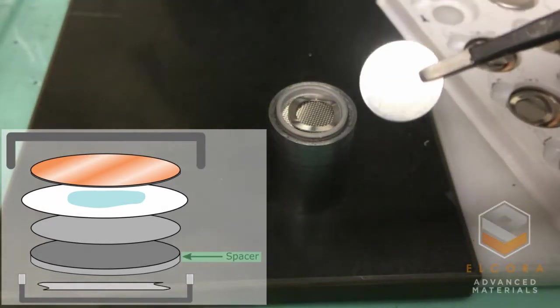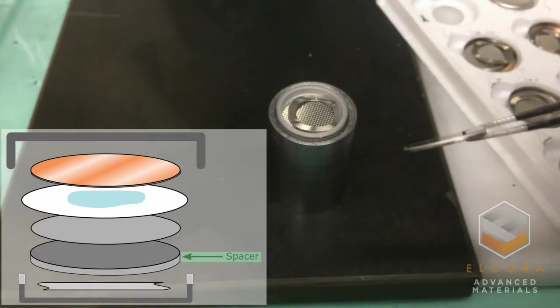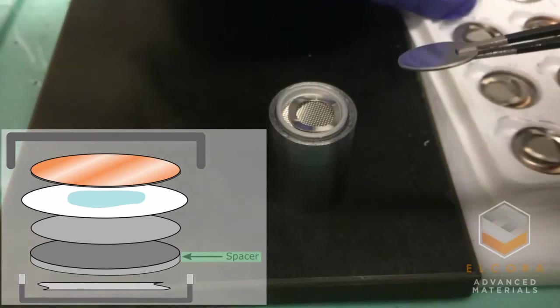A stainless steel spacer acts as a flat rigid current collector for the cathode that will be placed on top.